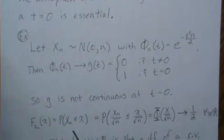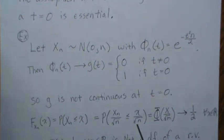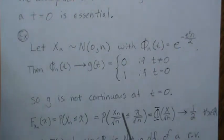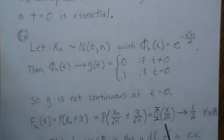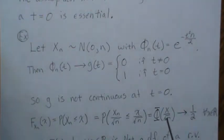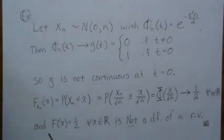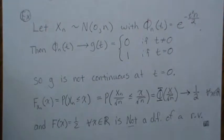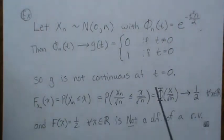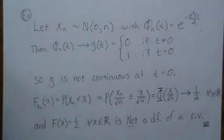Now let's look at the distribution functions. Capital F of Xn is by definition P(Xn < x). Dividing both sides by the standard deviation, this is a standard normal, so it equals Φ(x/√n). As n goes to infinity this goes to one half — the CDF evaluated at zero is one half — and this is true for all x. So the limiting distribution is the constant one half, which is not a valid distribution function, confirming the theorem doesn't apply when g is not continuous at t equals zero.